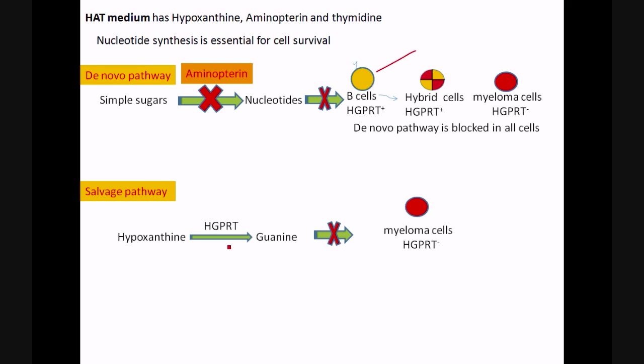This particular enzyme is deficient in myeloma cells, so this particular enzyme is absent. So myeloma cells cannot survive because they cannot use both of these pathways for survival.